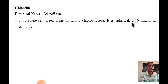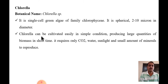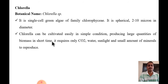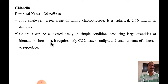Chlorella is spherical, 2 to 10 microns in diameter, and can be observed easily under a microscope. A key characteristic of chlorella is that it can be cultivated easily under simple conditions, producing large quantities of biomass in a short time. It requires only carbon dioxide, sunlight, water, and small amounts of minerals.